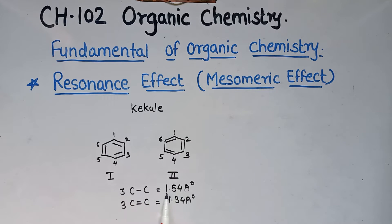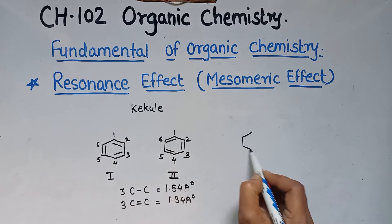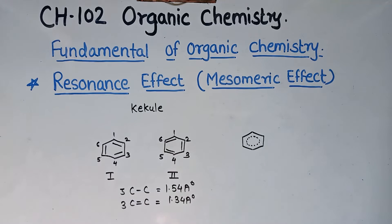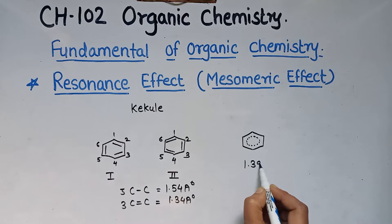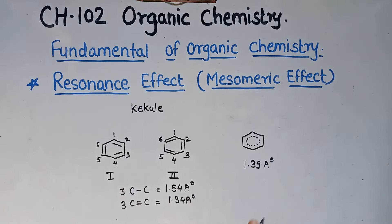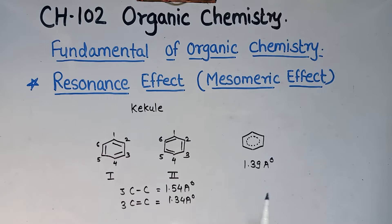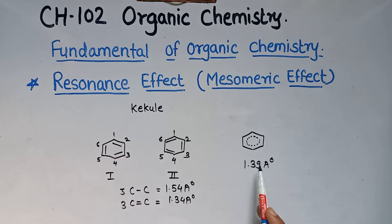However, according to X-ray crystallographic measurement, benzene shows only one type of bond length, that is 1.39 Å. This indicates that all the carbon-carbon bond lengths in benzene are equal.